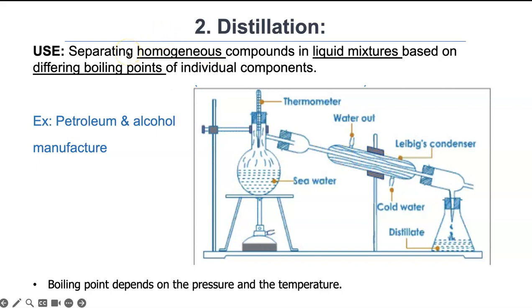Distillation is a way of separating homogeneous compounds mixed together in a liquid. Say you want to separate a mixture of some type of alcohol and water. This is done based on the boiling points of the individual components. The substance with the lowest boiling point will evaporate faster, sooner than the one with the highest boiling point.